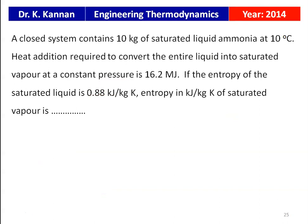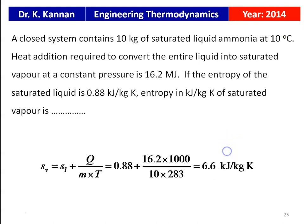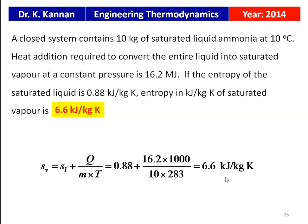Also from the 2014 question paper: a closed system contains 10 kg of saturated liquid ammonia at 10°C (283 K). Heat addition to convert entirely to saturated vapor at constant pressure = 16.2 MJ. Entropy of saturated liquid Sl = 0.88 kJ/kgK. Entropy of saturated vapor Sv = Sl + Q/(M·T) = 0.88 + 16,200/(10 × 283) = 6.6 kJ/kgK.